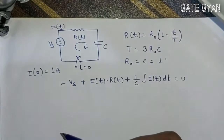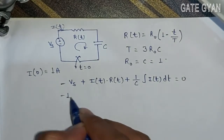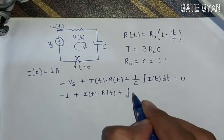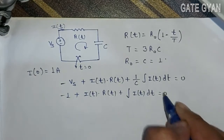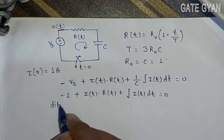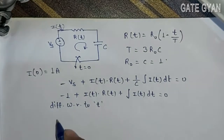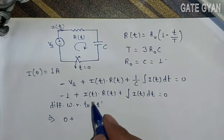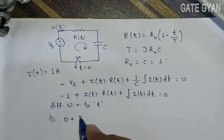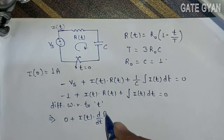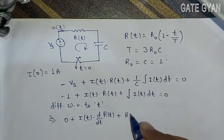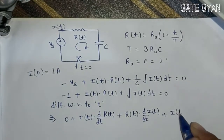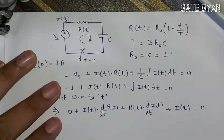Substituting the values: Vs is 1, so it is -1 + I(T)·R(T) + (1/C)∫I(T)dt = 0, with C equal to 1. Now differentiate with respect to time T. Since both I(T) and R(T) are time-variant, we apply the product rule: I(T)·d/dt[R(T)] + R(T)·d/dt[I(T)] + I(T) = 0, since the integration and differentiation cancel out.